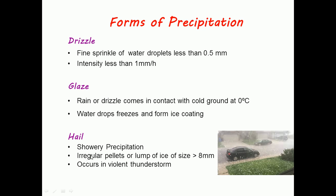Hail is showery precipitation with irregular pellets or lumps of ice greater than 8mm. It occurs in violent thunderstorms.